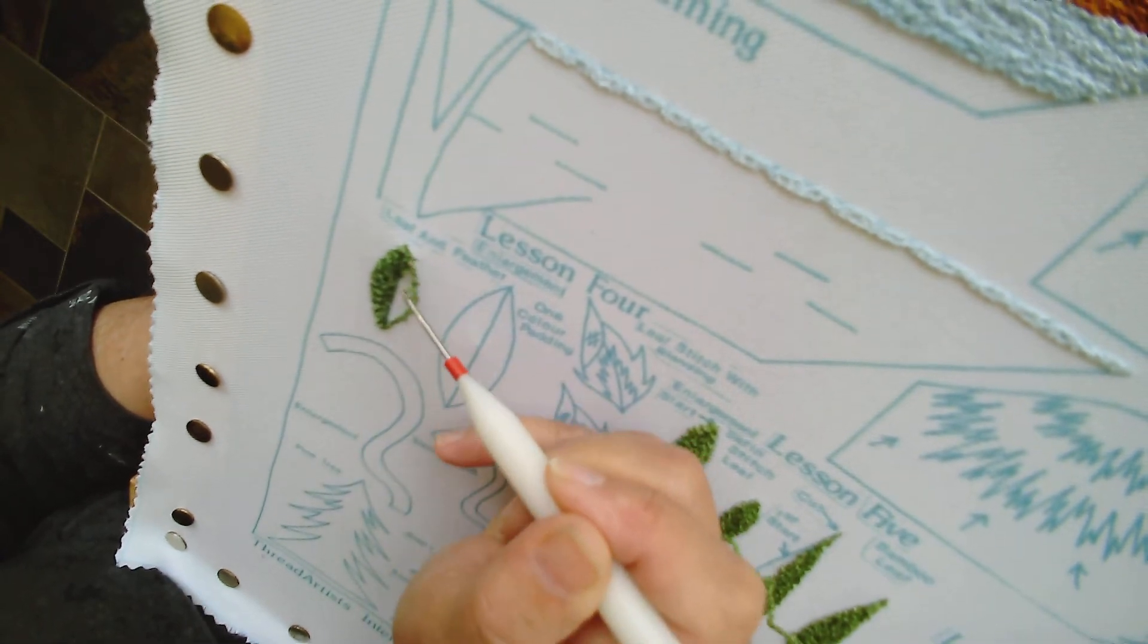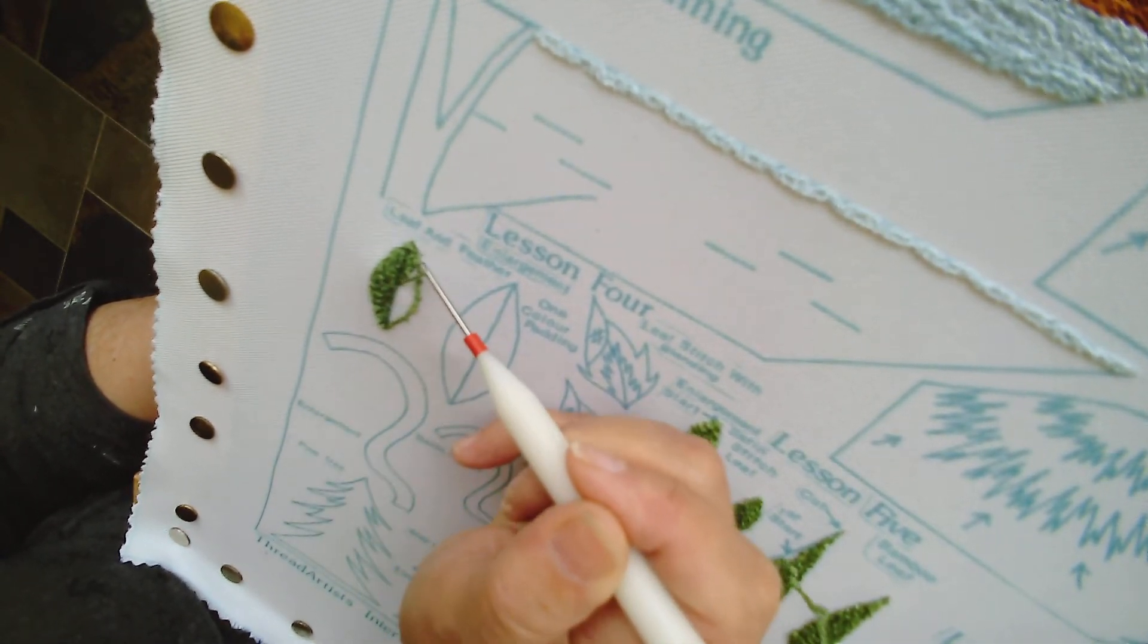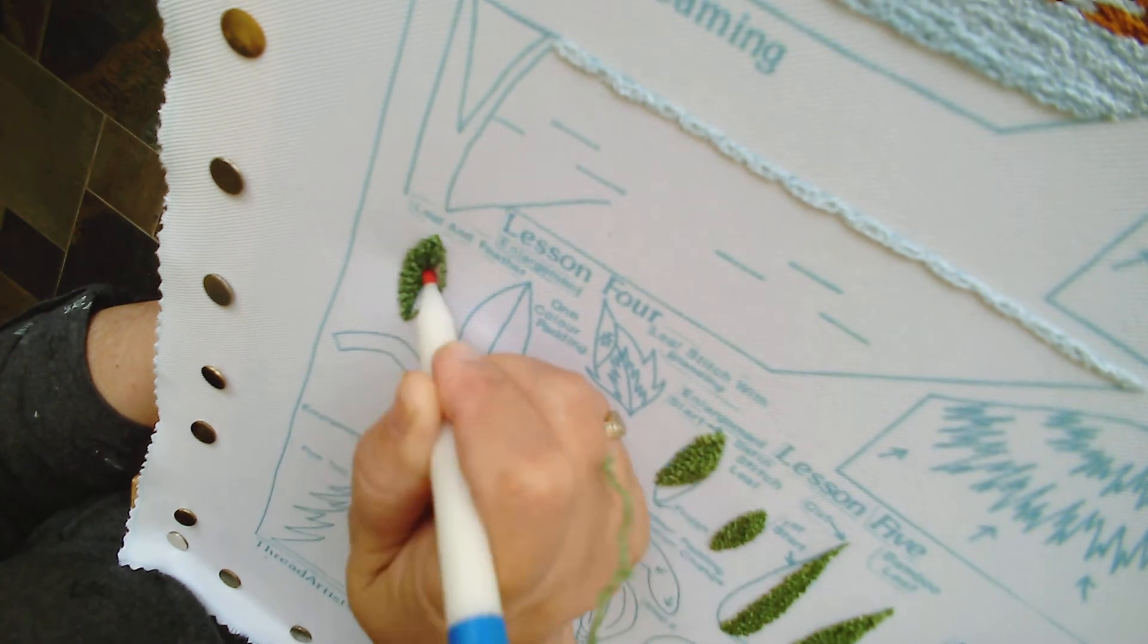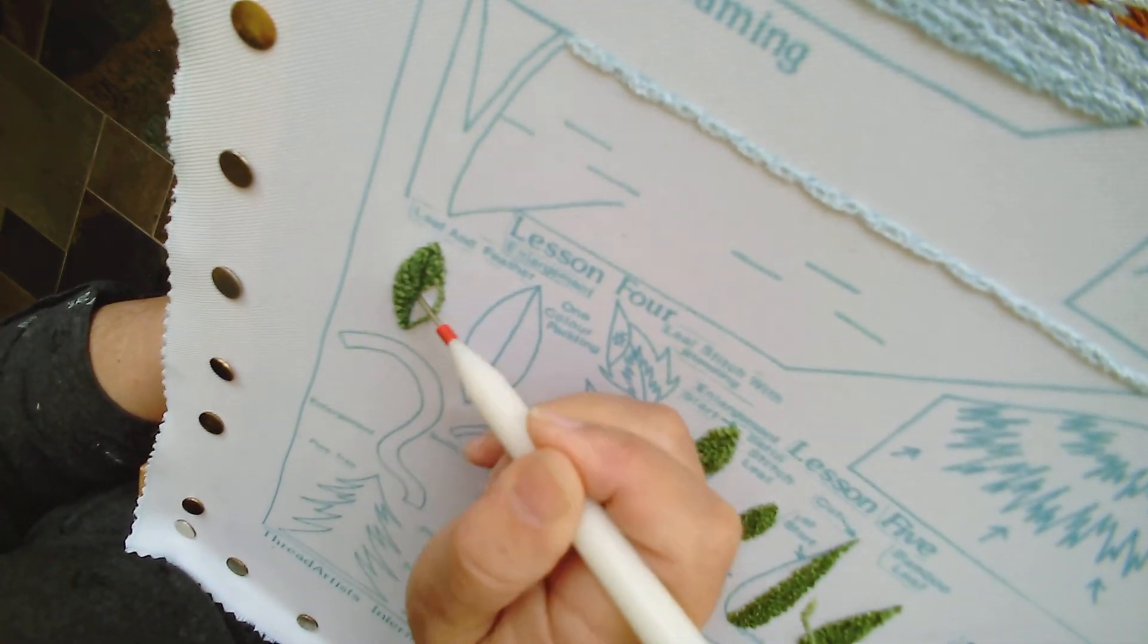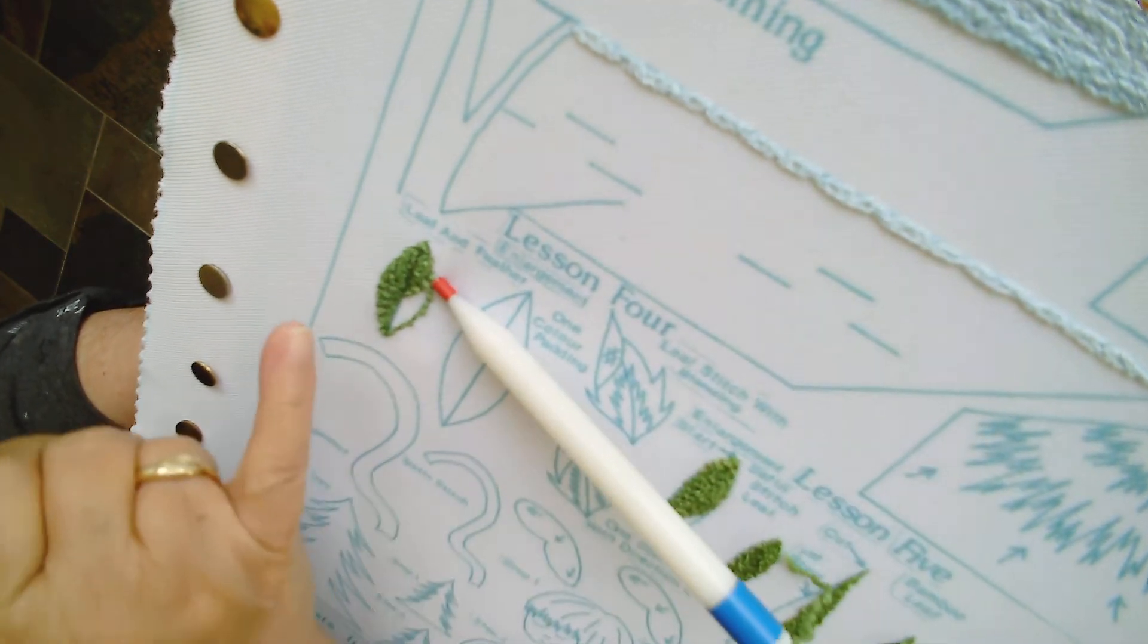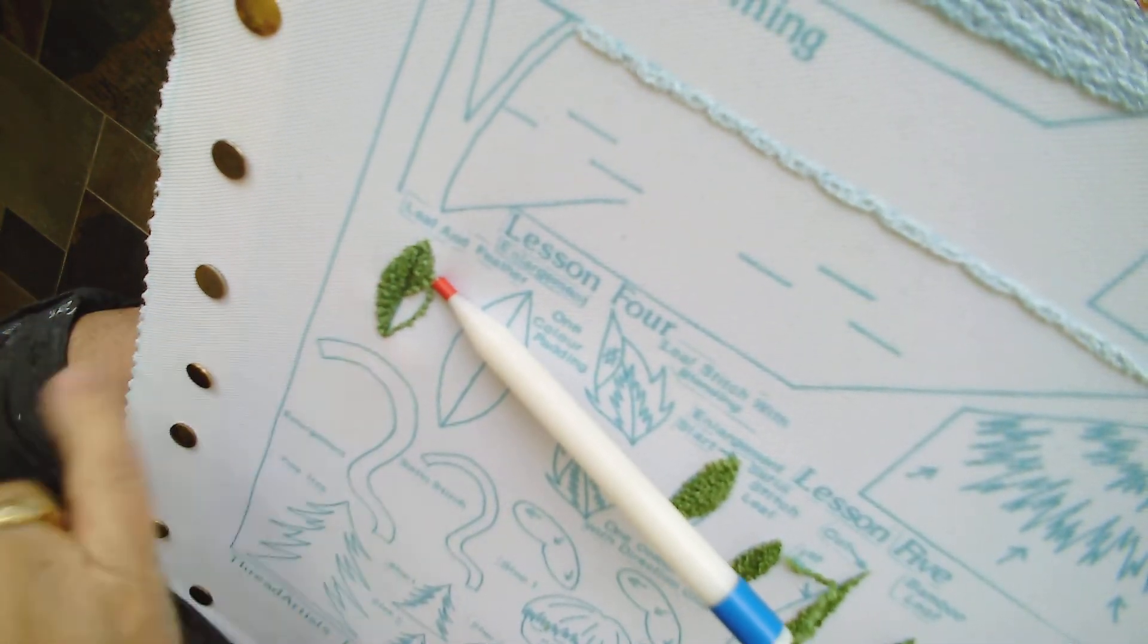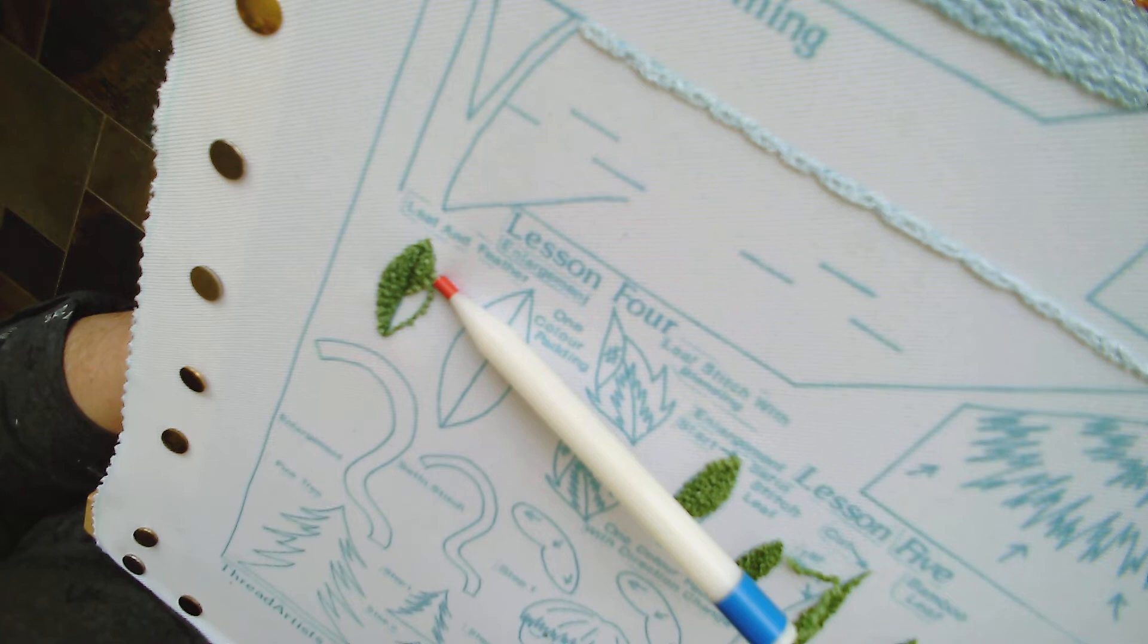You stitch coming right to the center vein, touching the previous stitches, and it will create a divot in the middle, right here. You'll have a divot right down the middle, which will show the center of your leaf.